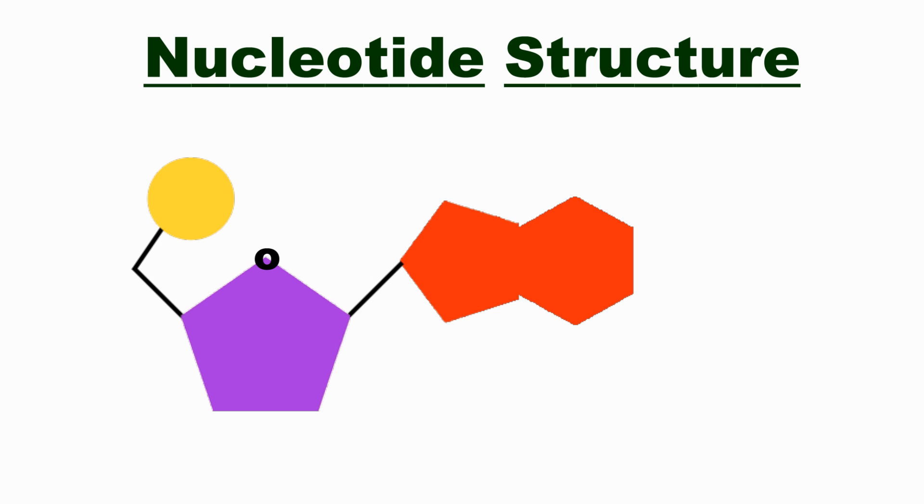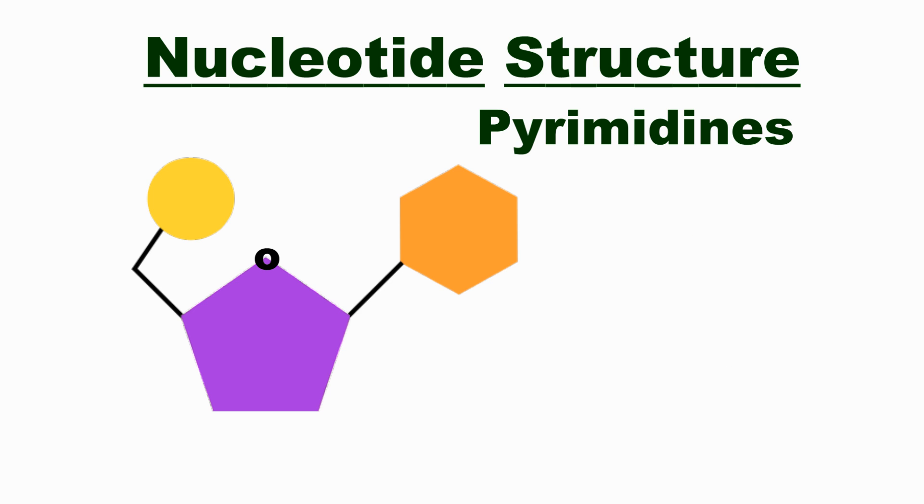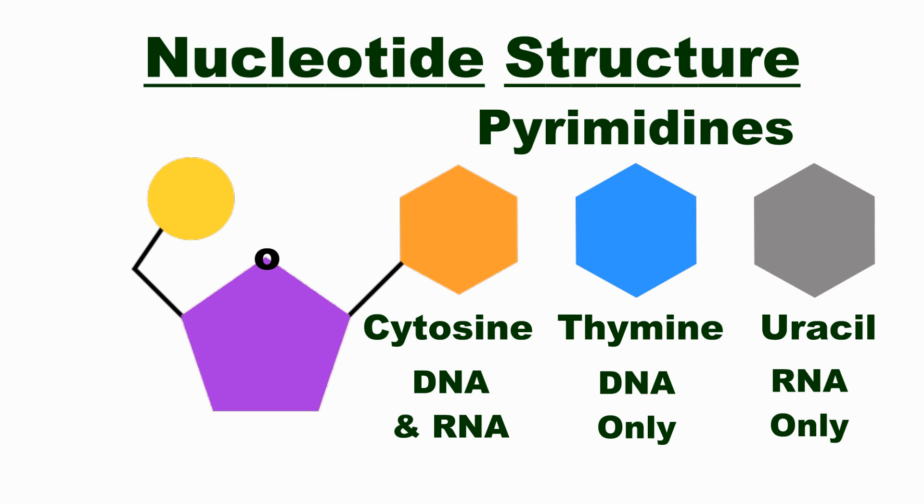The last part is a ring structure called a nitrogenous base, that's used to name each nucleotide. You'll find one of five different types bound to the one carbon of the sugar ring. Purines are a dual ring structure, either adenine or guanine. Pyrimidines are single rings, either cytosine, thymine, or uracil.